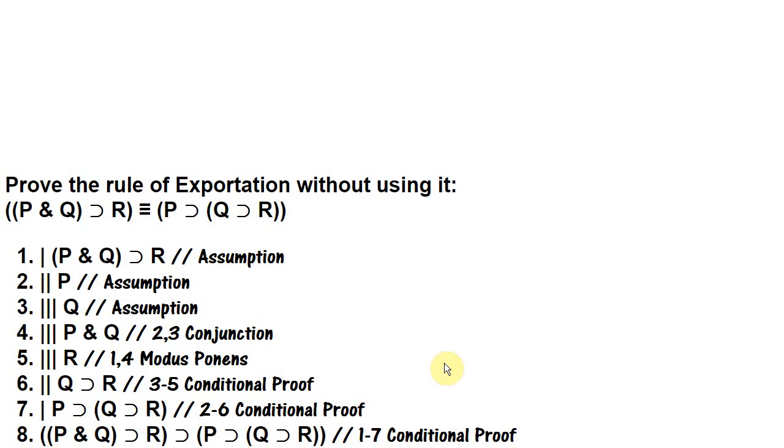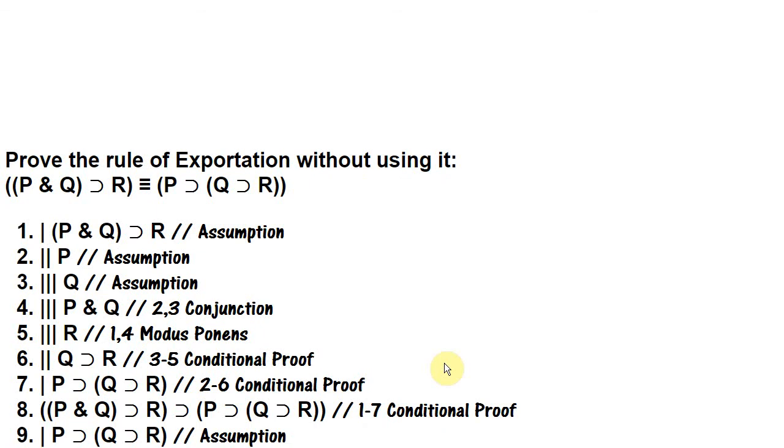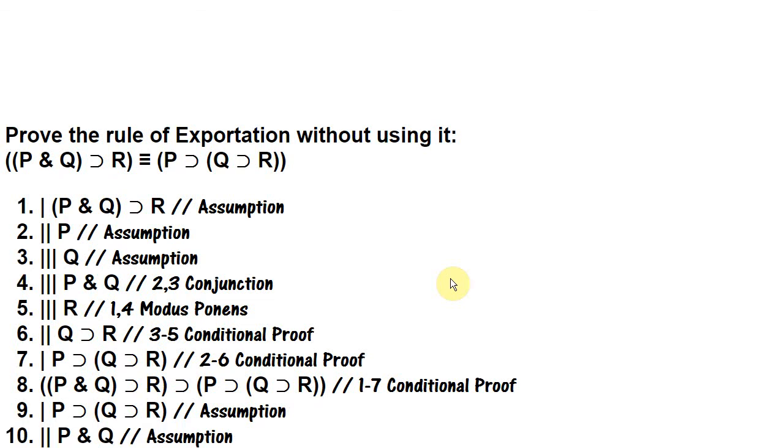And now we can just go in the other direction. We're going to start by assuming if p, then if q, then r. And what we want to get is if p and q, then r. So we're now assuming p and q, and we want to get r.